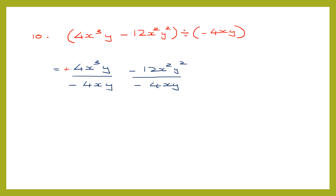For the first term: plus divided by minus gives minus. The 4s cancel. Then x cubed divided by x is x to the power of 3 minus 1, which is x squared. The y's cancel, giving us minus x squared.